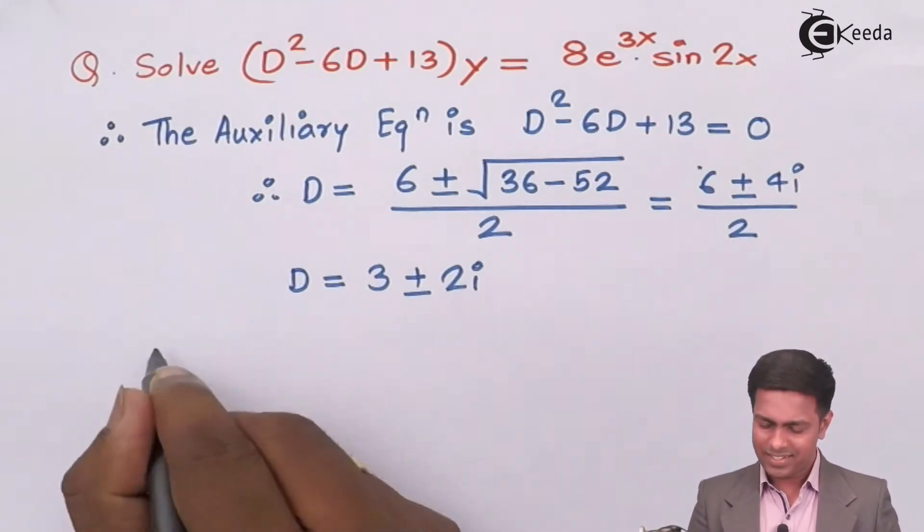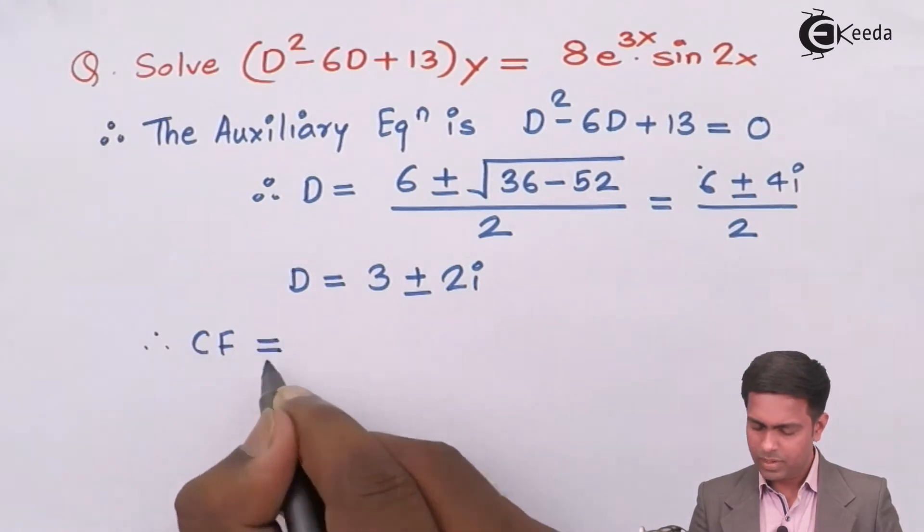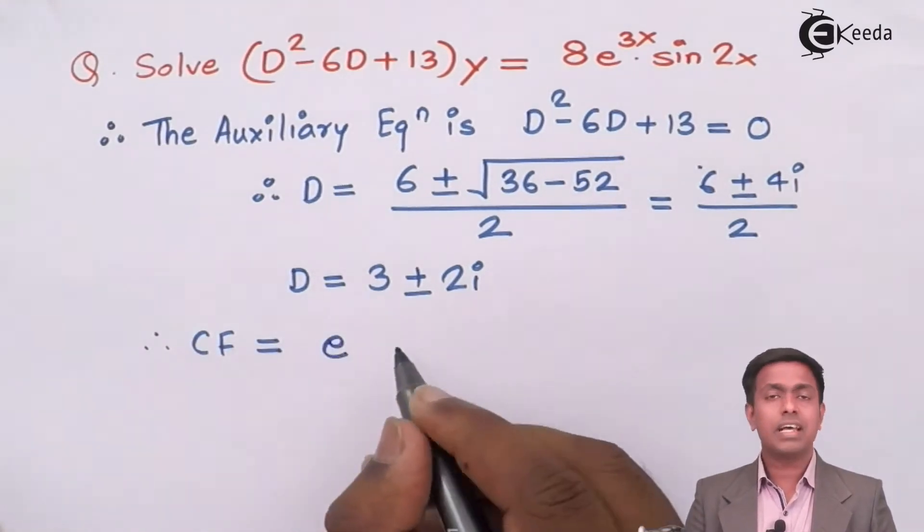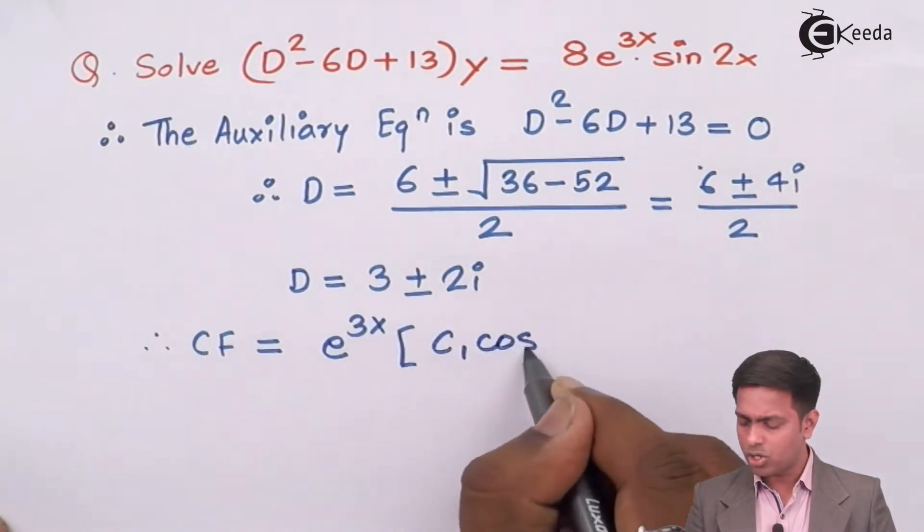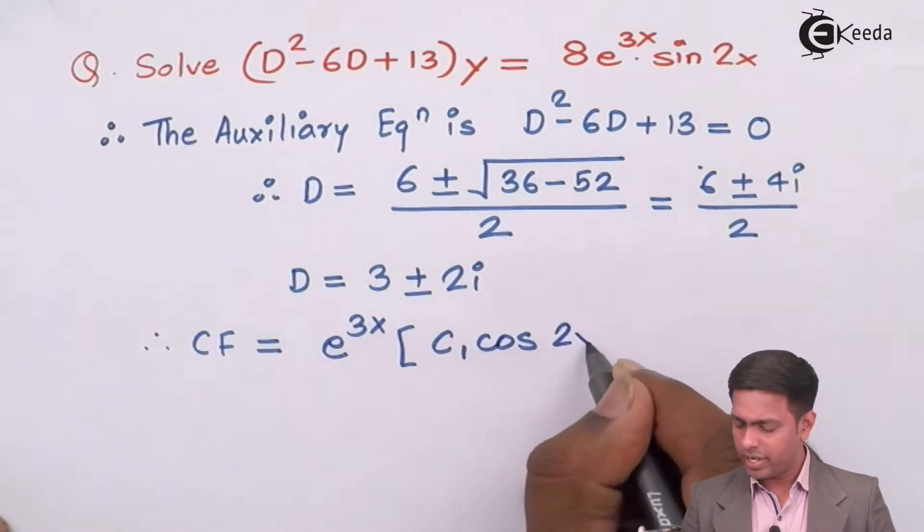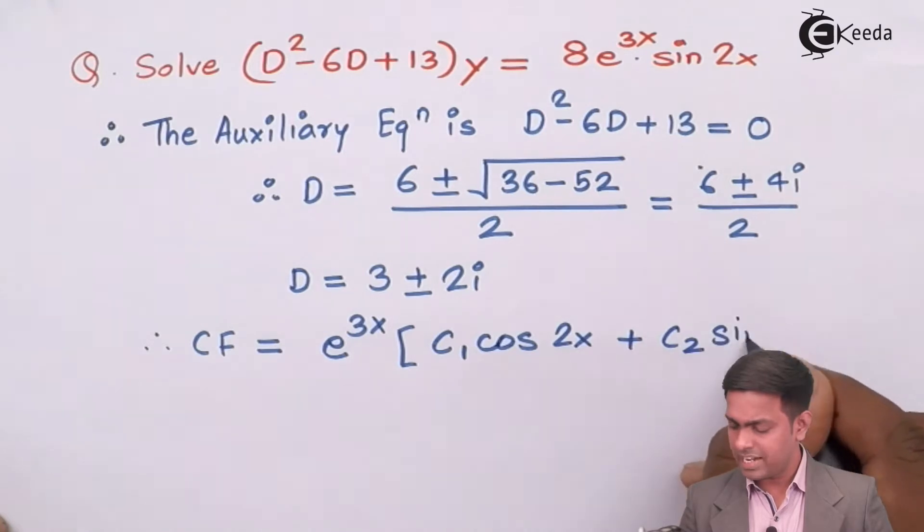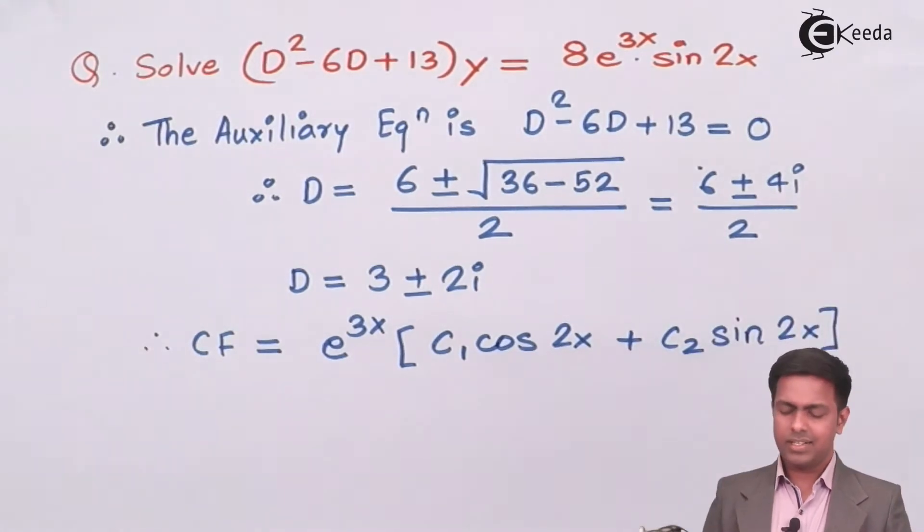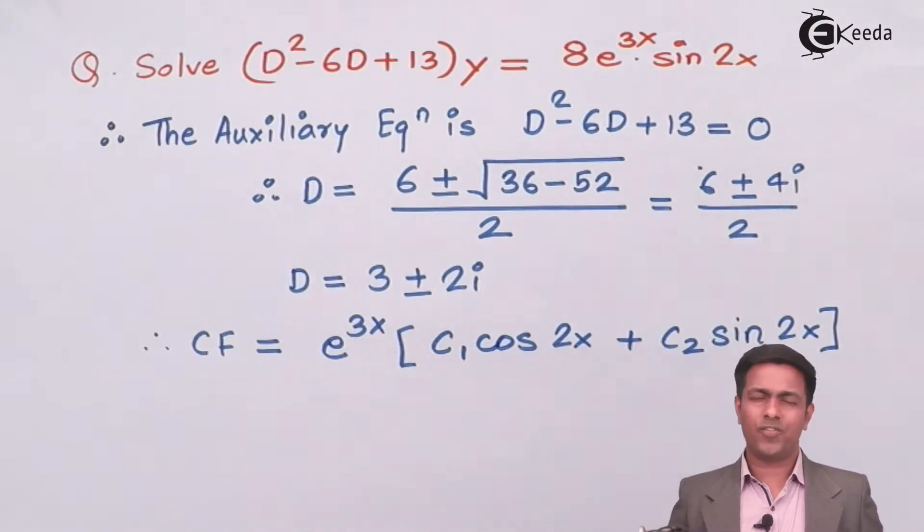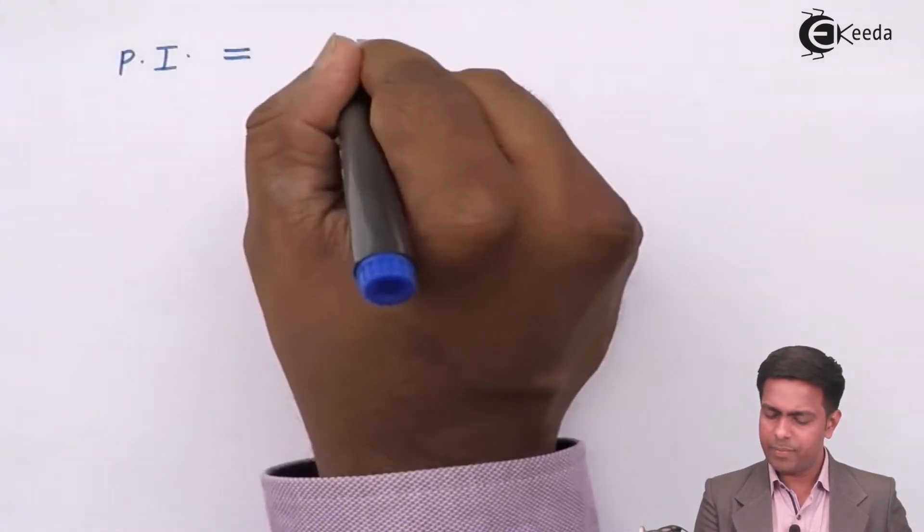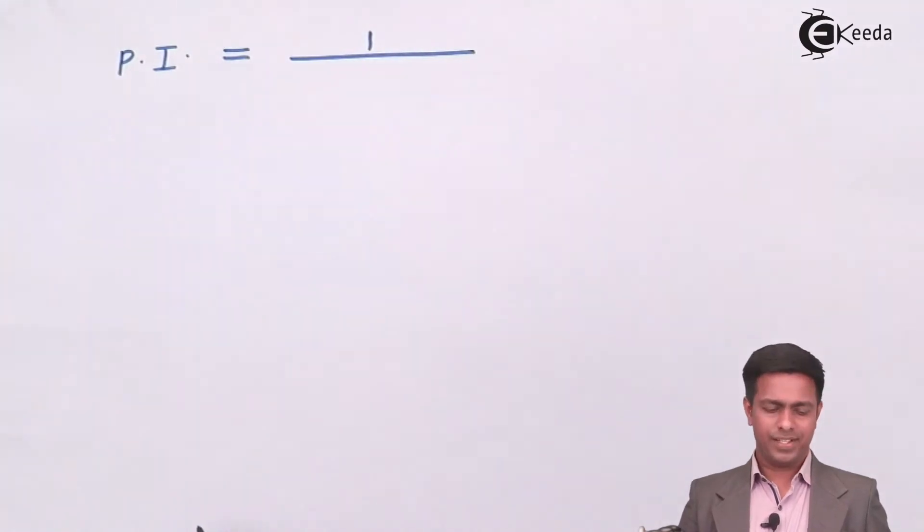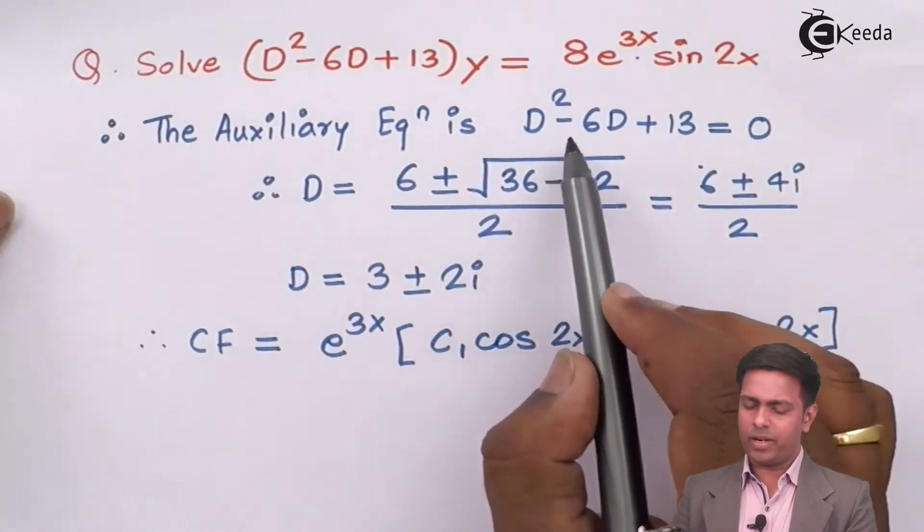Therefore CF is e to the power real part which is 3x in the bracket c1 cos of imaginary part that is 2x plus c2 sin of 2x. This is the value of CF. Now let's find out the particular integral. Particular integral is given by the formula 1 upon function of D. So here the f of D is D² - 6D + 13 into the right hand side.